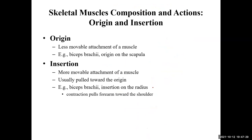Let's talk about origins and insertions. In some literature, they talk about not using origins and insertions and just using attachment sites, but I want to mention them in case you're reading older literature. An origin is the less movable attachment of the muscle — kind of like the anchor. The insertion will be the more movable portion. The origin is usually going to be more proximal, closer to the axial skeleton, and the insertion is the movable attachment site.